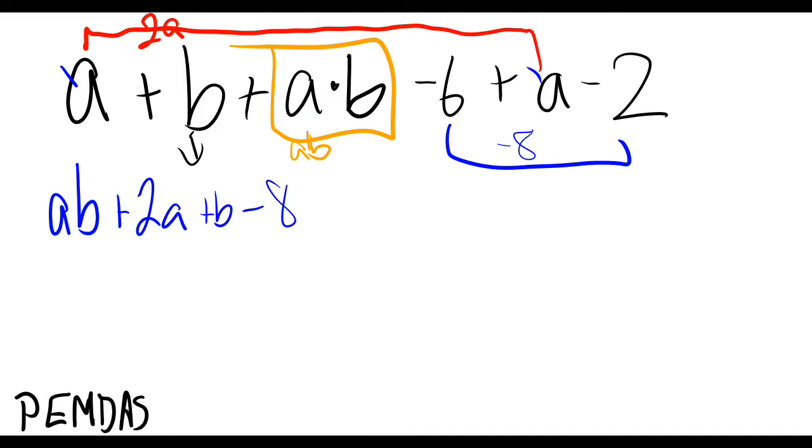All right, so let's plug in our numbers. We'll use 1 and 2. So we have 1 times 2, plus 2, 1, plus 2, minus 8.